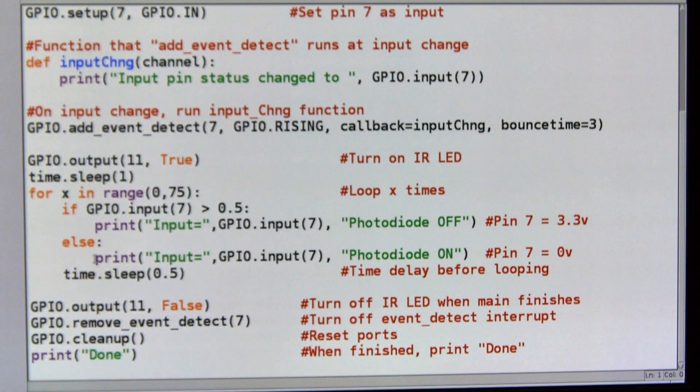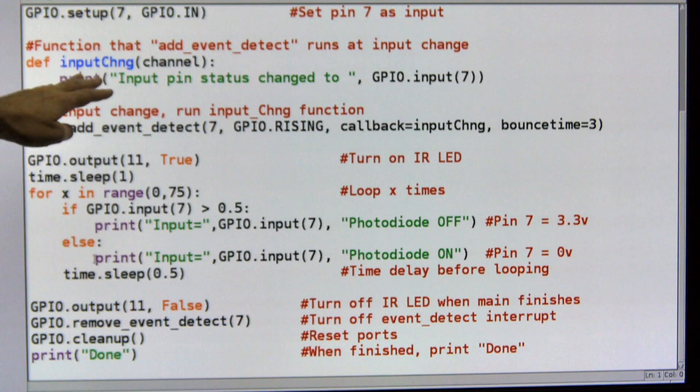So the computer does not have to spend all of its time just monitoring pin 7. It can go off and do other interesting things. And then when pin 7 changes, it comes off, it does whatever I want it to do. In this case, print the value of pin 7, and then it goes back to work.